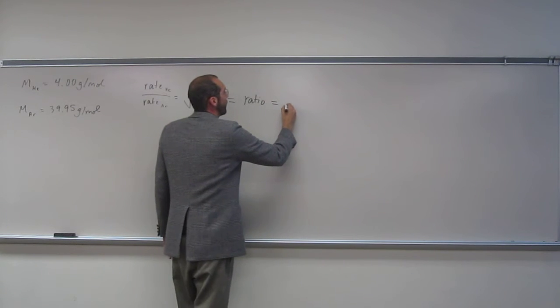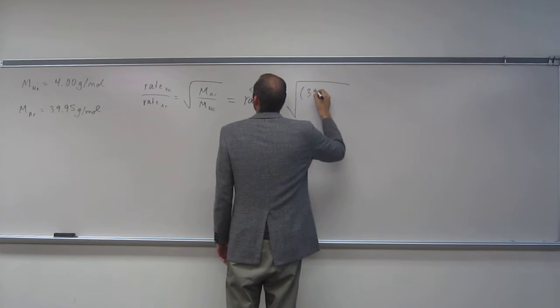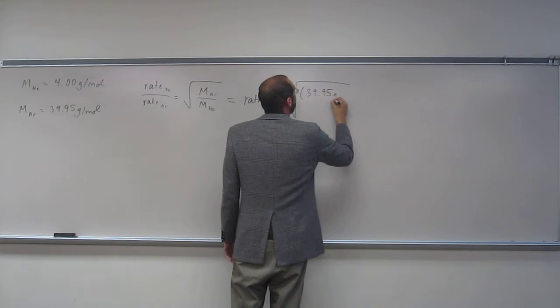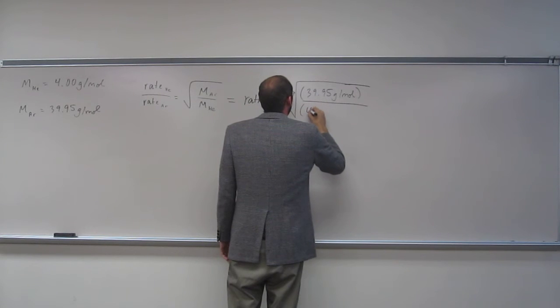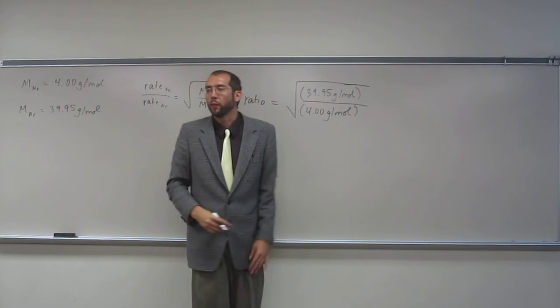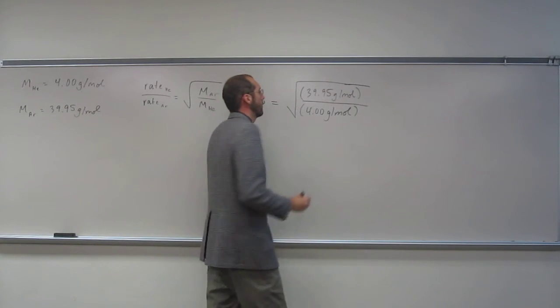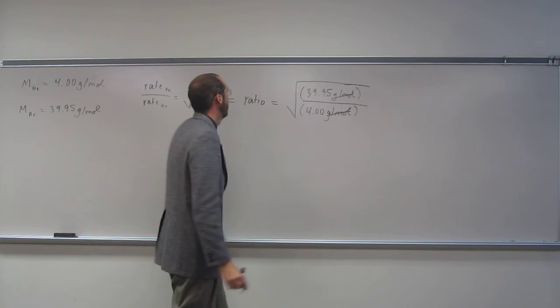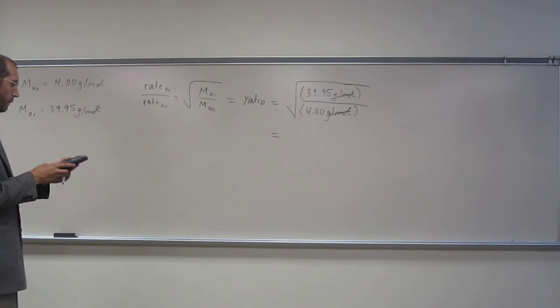So in order to do that, we just plug our values into this equation. So 39.95 grams per mole divided by 4.00 grams per mole. And we'll use these numbers as significant figures, even though you usually don't from the periodic tables. Since we don't have any other numbers, we'll just use these ones. Cancel out grams per mole. So when we do this, take 39.95 divided by 4,